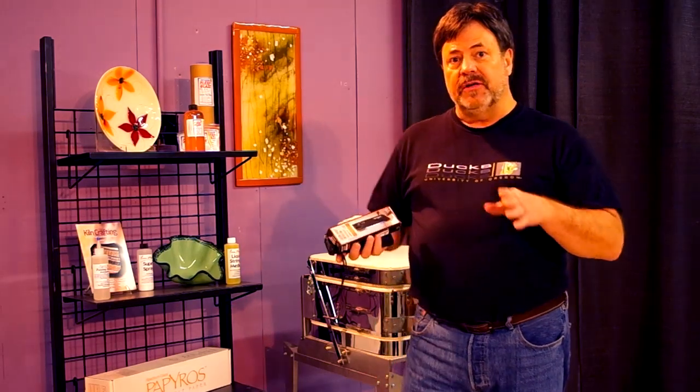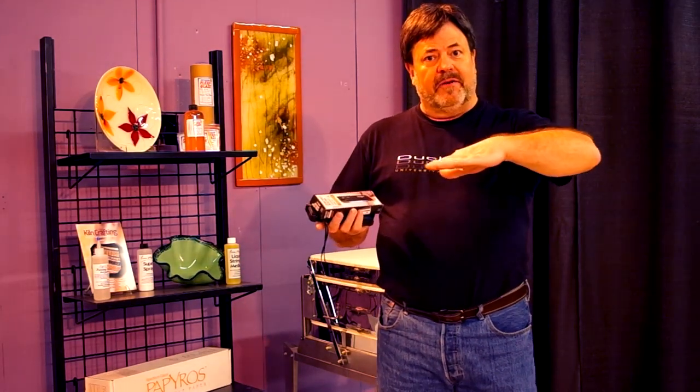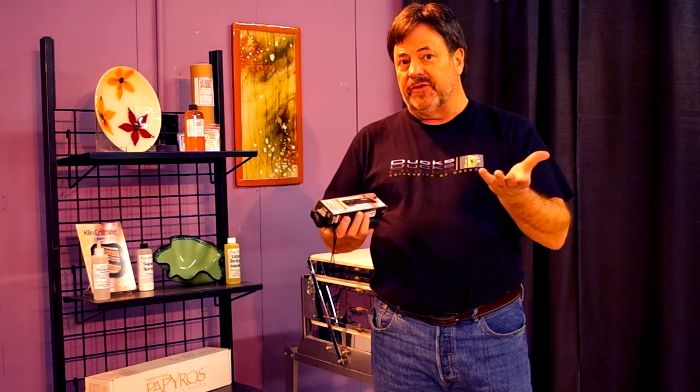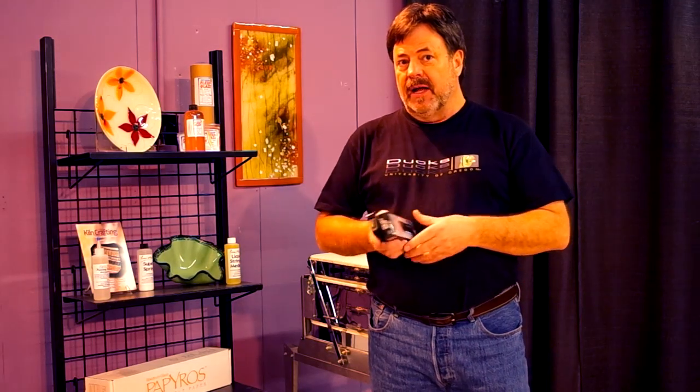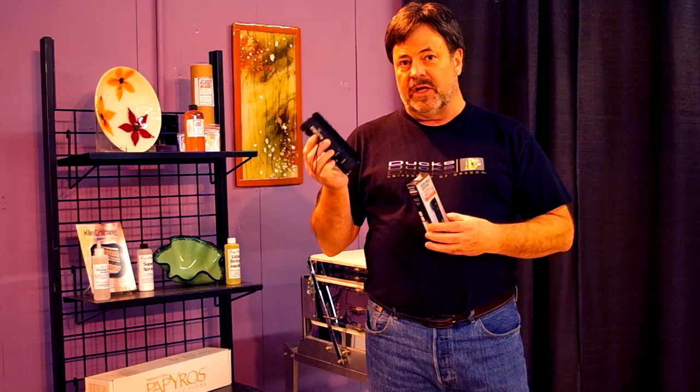When float glass is manufactured, they float it across the bed of molten tin. That tin leaves a residue that you can't see with the naked eye. You can identify it with a short-wave UV light.